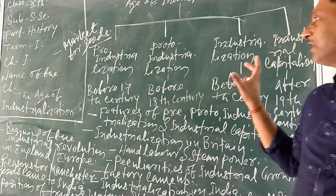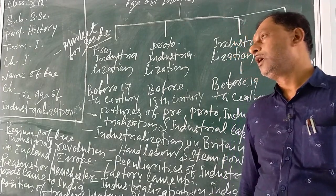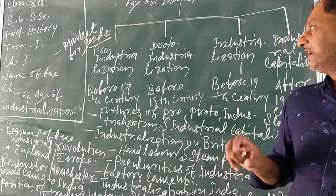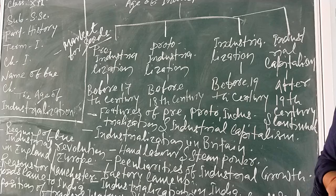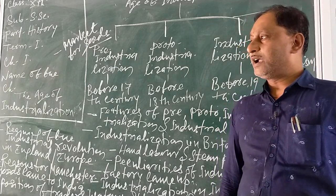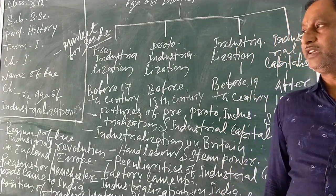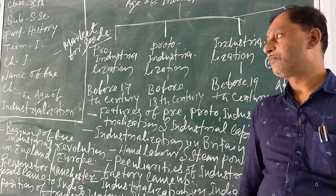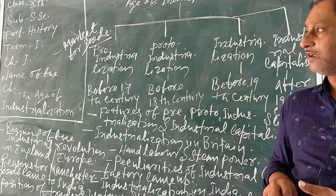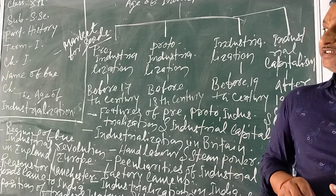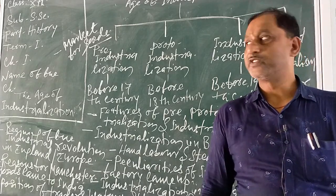Some important questions from this chapter include: features of pre-industrialization, features of proto-industrialization, features of industrialization, main features of industrial capitalism, peculiarities of industrial growth, why small scale industry predominated in India, why Manchester goods came to India, what were the positions of workers, weavers and small traders in India and England, and how Manchester goods came to India and what were the ways of marketing goods and services.